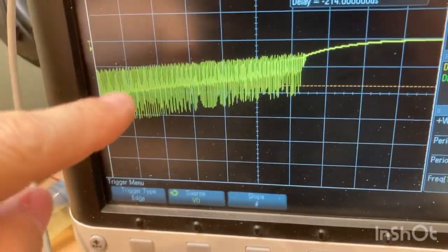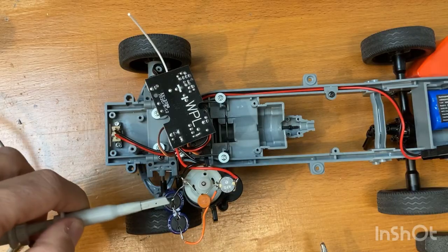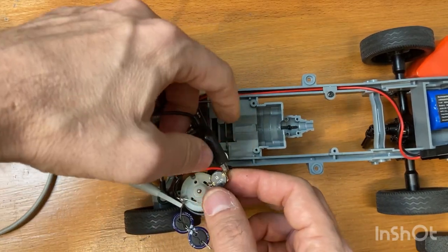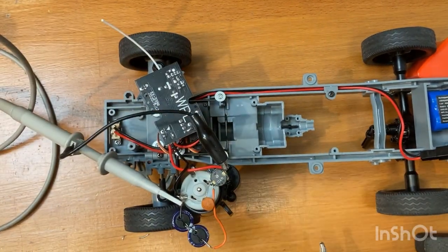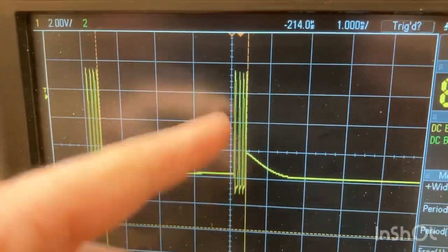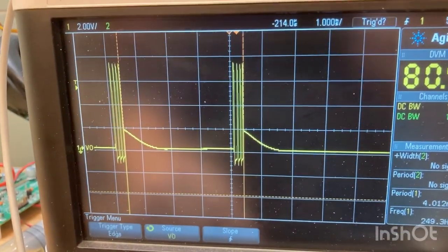And now let's see the waveform of the circuit with the inductor. Let's connect the probe directly at the speed controller leads. Those are now much better. You see that the regulator is making a lot of short pulses and is able to regulate the desired current.